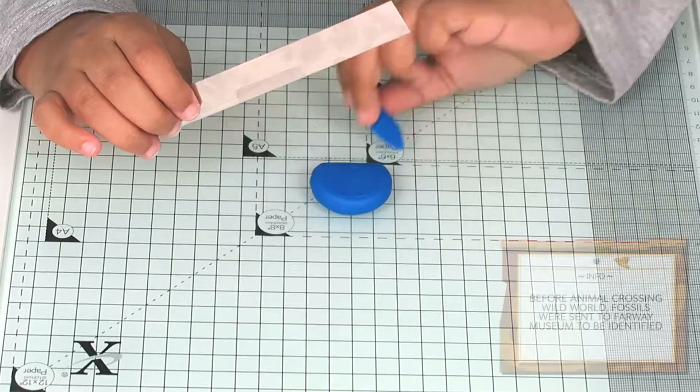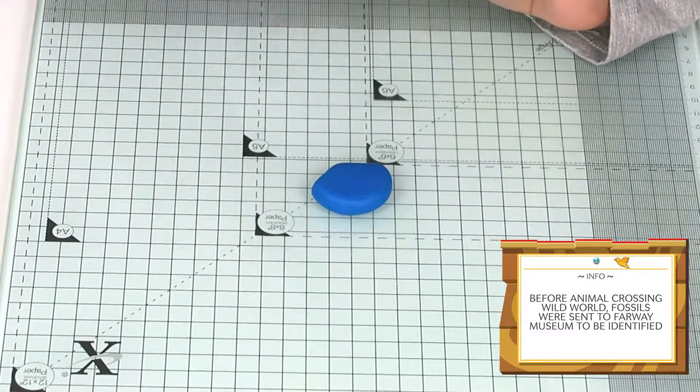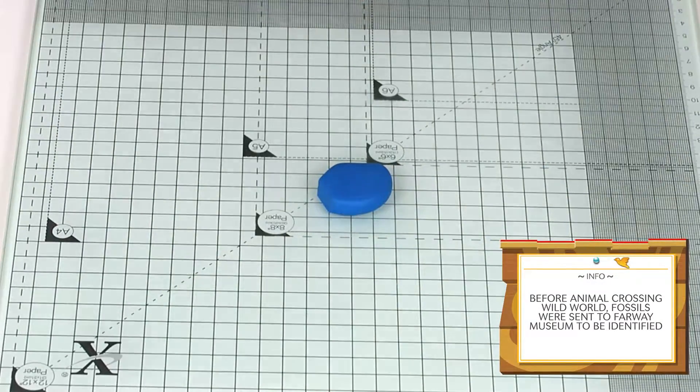Then you want to use your cutting tools to trim sections off to create a stone shape. Try to make it look uneven by trimming off different sized sections.